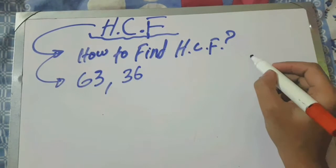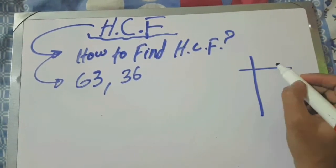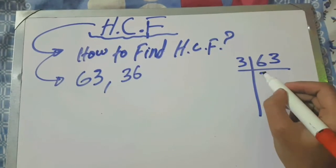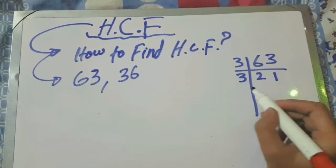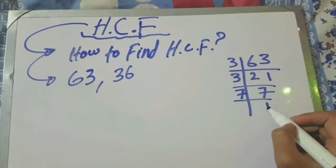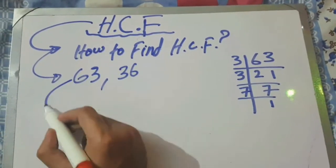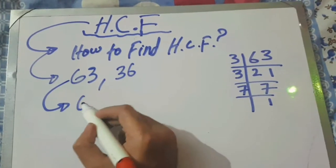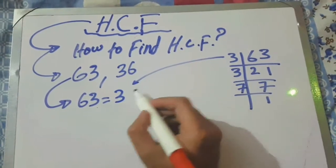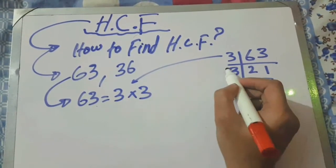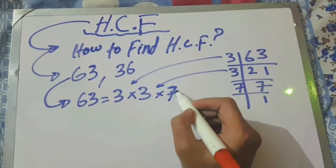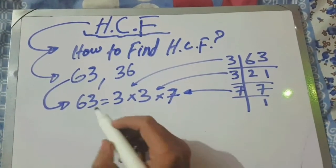First, we will make the factors of 63. We get 3 twos are 6, 3 ones are 3, 3 sevens are 21, and 7 ones are 7. Now we write the factors of 63: you can see that 3 multiplied by 3 multiplied by 7. Here only three prime factors are present in 63.